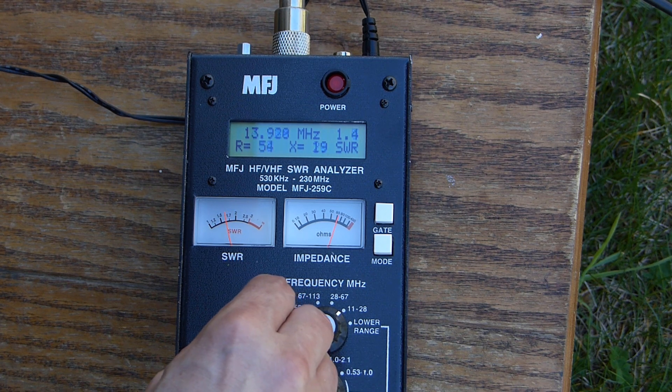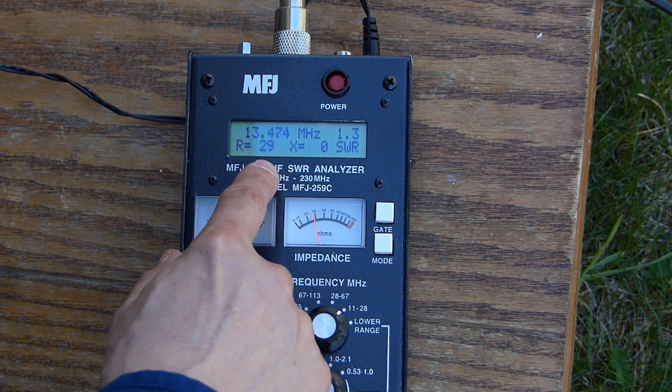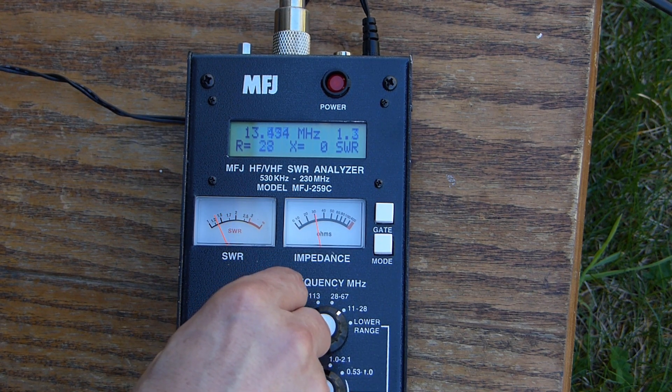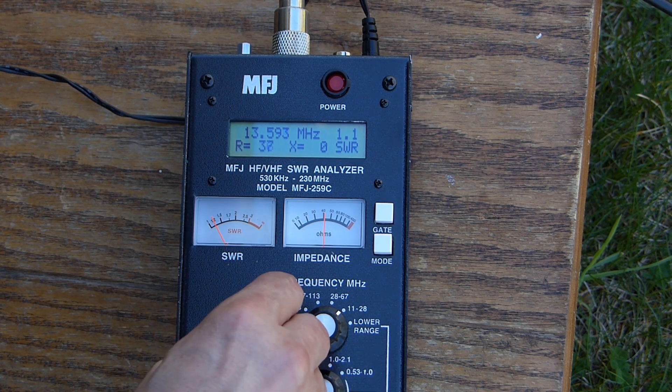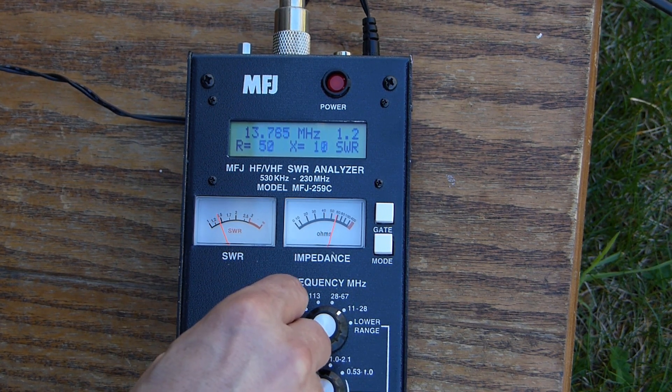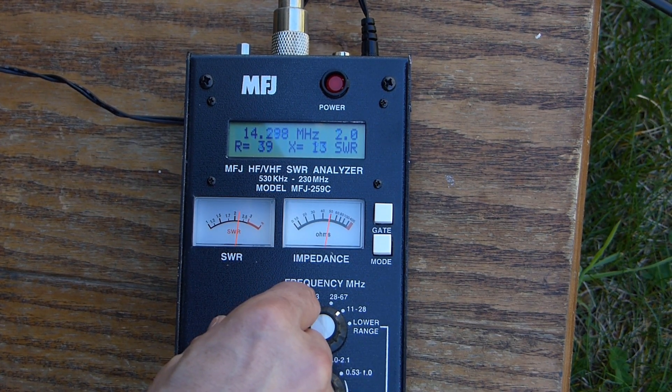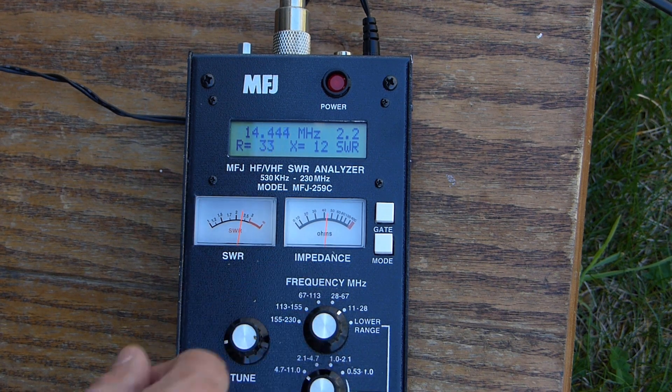So now if we slide over to 20, you can see if I tune around here, the antenna is probably a little bit long for 20. You can see things bottom out right around 13.5 megahertz or so. They're looking pretty good there. And then as we slide up into the 20 meter band, things start to look not horrible, but not as good as they could be.